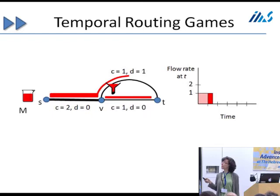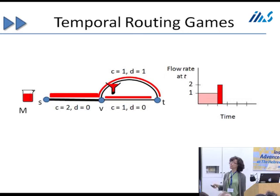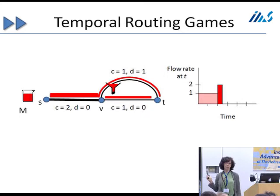Eventually users start to use the top link, but since the top link has delay one, they're not actually going to arrive at the sink immediately. And finally, when they arrive at the destination, we have traffic from two links arriving, so the rate of arrival at the destination jumps up, and that's reflected in the arrival rate graph on the right-hand side.